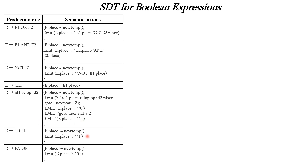Next we have E → true and E → false. For true, we create a new temporary variable in the position of E and assign 1 to indicate truthfulness. For false, we assign 0 to indicate false.